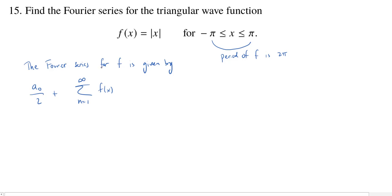Then you're going to have a sub n times the cosine of n pi x over l, where l is the half period of f. That is, you take the period for f and divide it by 2, plus b sub n times the sine of n pi x over l.